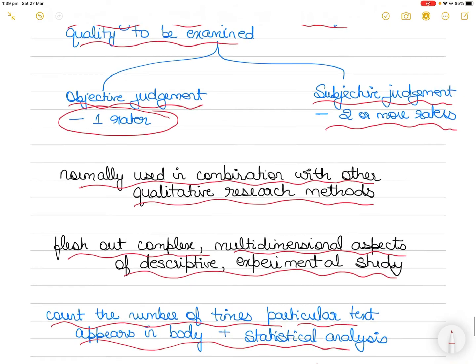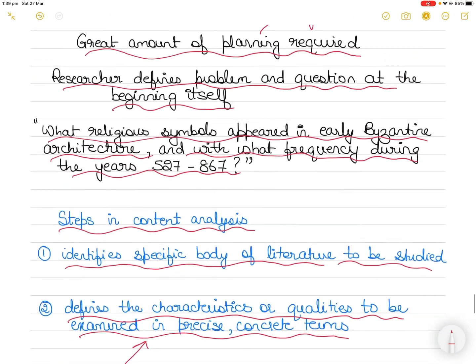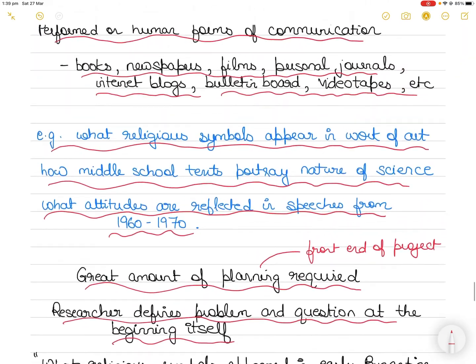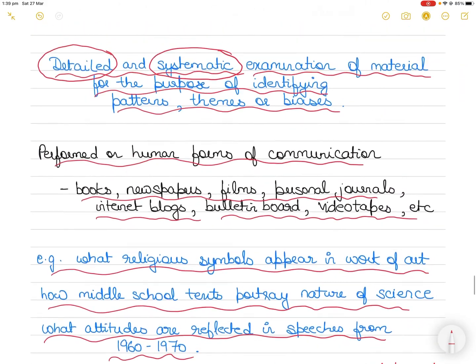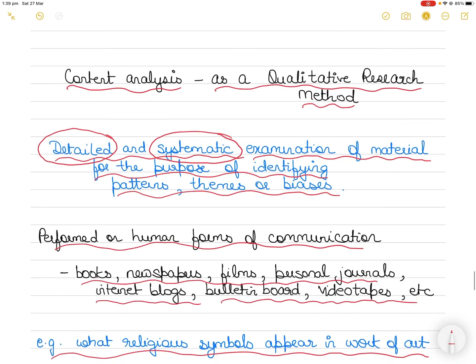So this was content analysis, and that covers the five types of research methods that we can adopt in a qualitative study. In this video I only discussed content analysis, but in the description section below you will find the details of the other methods.